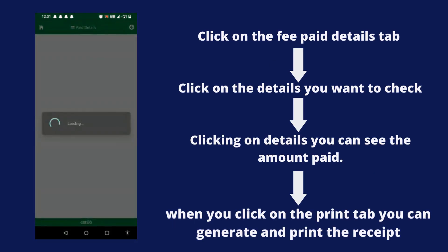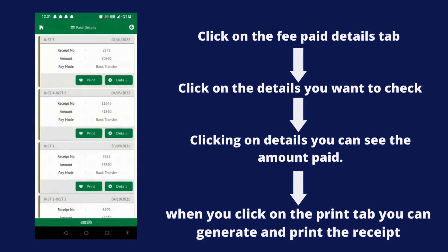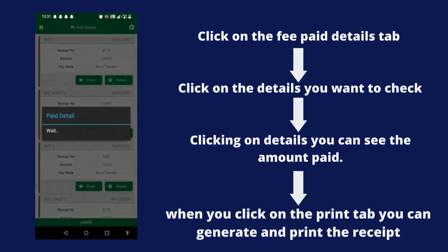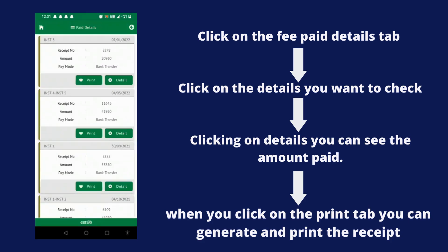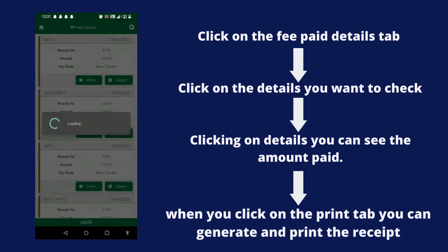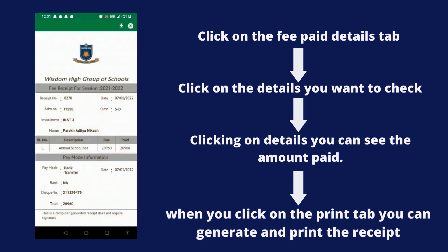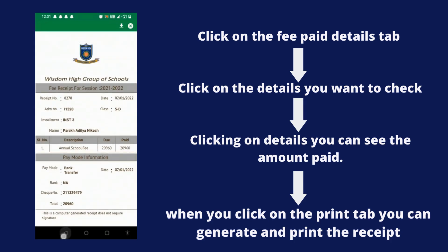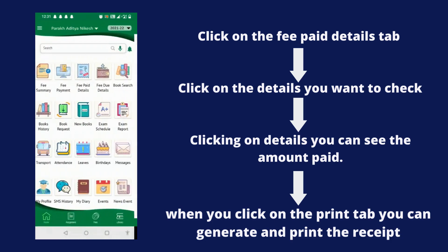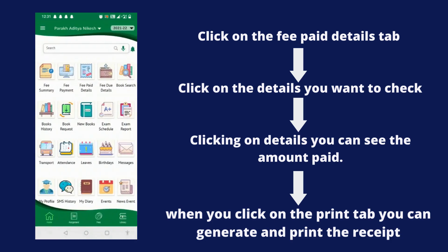Click on the Fee Paid Details tab. Click on the details you want to check. By clicking on the details, you can see the amount which has been paid. You can also generate the receipt of the paid amount through the Print tab.